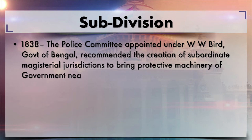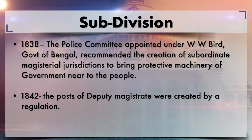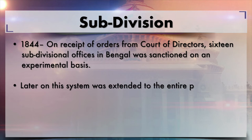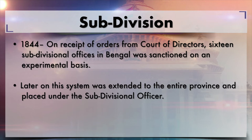In 1838, a police committee appointed under W.W. Bird, Government of Bengal, recommended the creation of subordinate magisterial jurisdiction to bring the protective machinery of government closer to the people. As a result, in 1842 the posts of deputy magistrate were created by regulation. In 1844, on receipt of orders from the Court of Directors, subdivisional officers in Bengal were started on an experimental basis, with 16 such subdivisions sanctioned, later extended to the entire province.